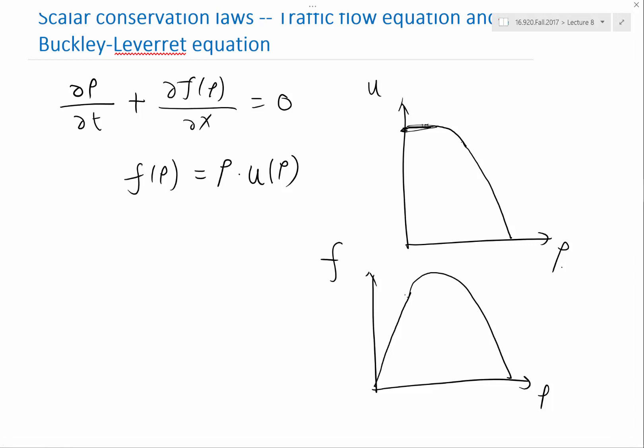This is an interesting example because the flux function, as opposed to the Burgers equation u squared over 2, this flux function is in the mathematical sense concave, as opposed to convex. The curvature is negative. The second derivative is negative. And we are going to look at how that affects flux reconstruction.